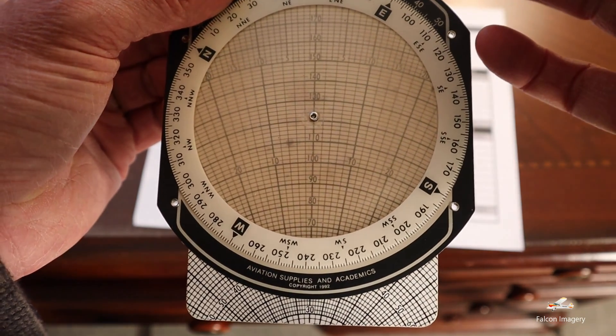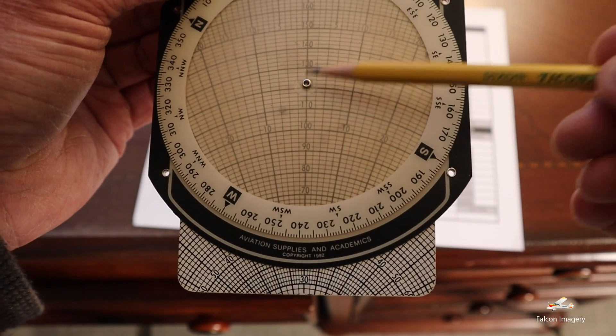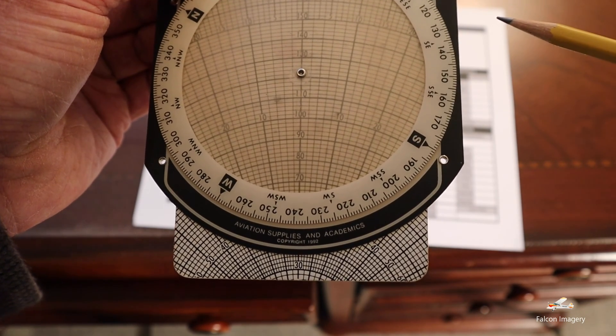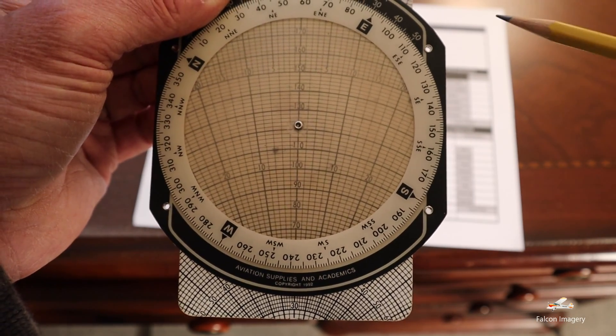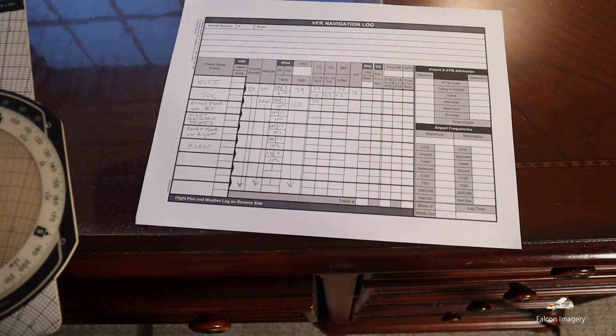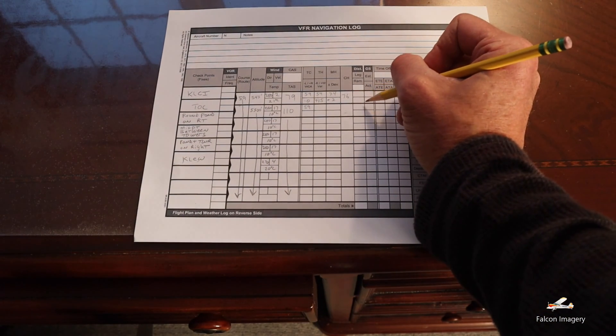Now the first thing we want to note is what is your ground speed? Ground speed reads underneath the center point or grommet. So it looks like it's about 121 knots ground speed. We'll make a note of that on our chart. And we'll go ahead and we'll just put that right here.